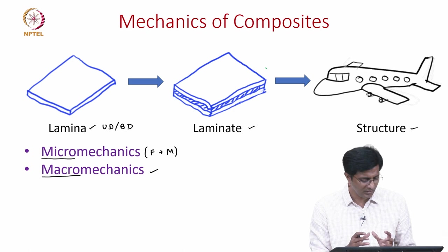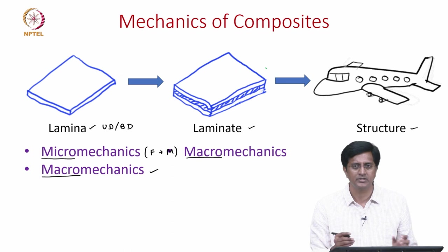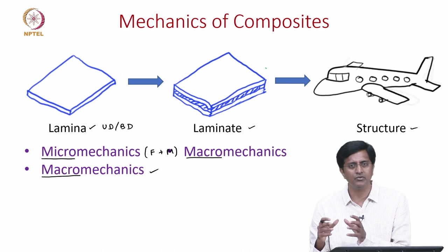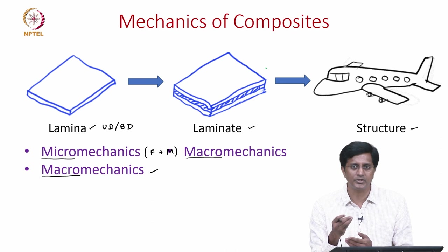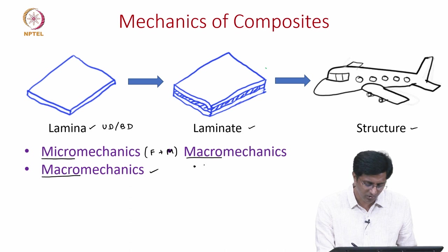Once we understand both the micro and macro mechanics we will move on to the laminate, where we will discuss the macro mechanics of the laminate. There too we will assume that the laminate is a homogeneous material which means it has some effective or average properties. These average properties we will try to derive based on the information we get from the stacking sequence and the properties of each individual layer. Essentially we will be focusing on one theory called the classical laminate theory.